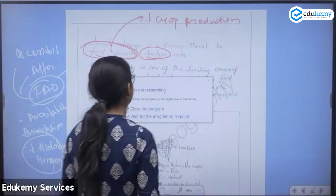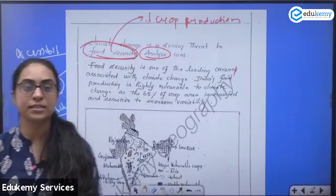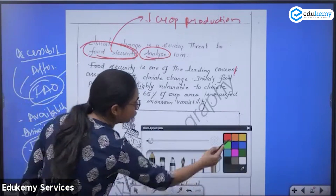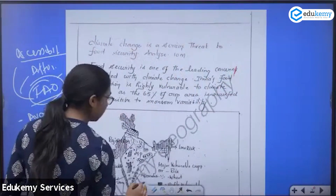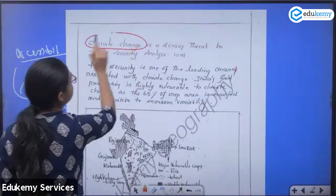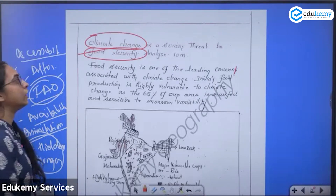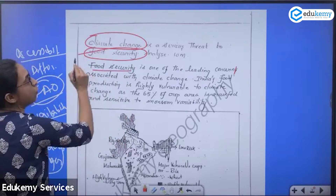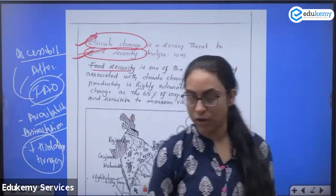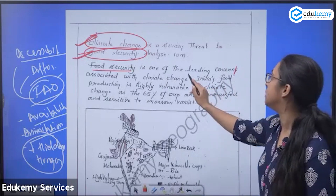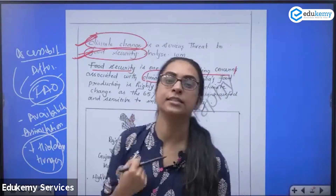We have to debate whether climate change is a serious threat to food security or not. In your introduction, there are two elements: climate change and food security. Mention both in the introduction. You should say that food security is a leading concern associated with climate change — link food security and climate change.